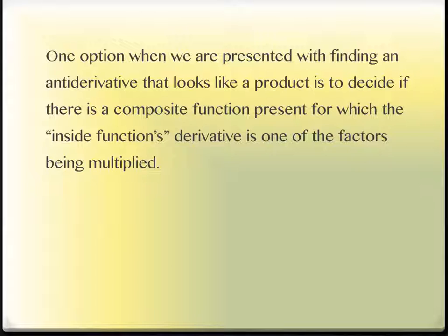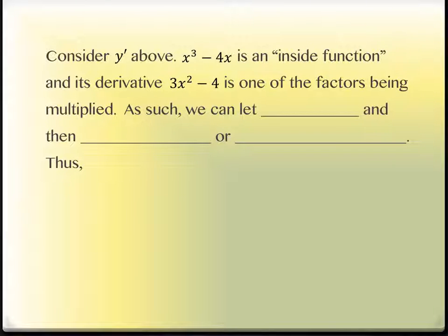From algebra, composite means simply one function inside of another one, like the chain rule, right? Where there's an inside something going on and an outside something going on. And if the derivative from one piece of that is present in the other piece. Let me show you how that works.